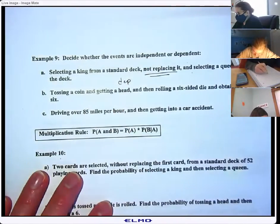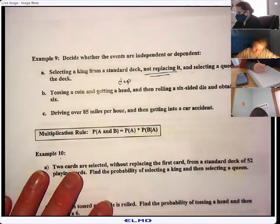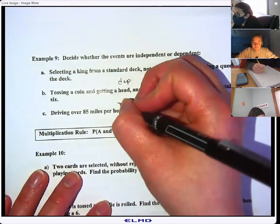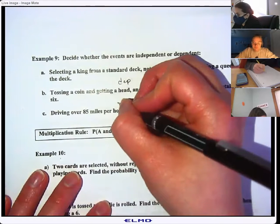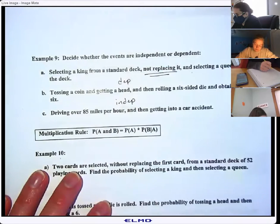Tossing a coin, getting a head, and then tossing a six-sided die and obtaining a six. What do you think about that one? Dependent? Independent, don't affect each other. You were talking about not affecting each other, but you think you just said the wrong word.